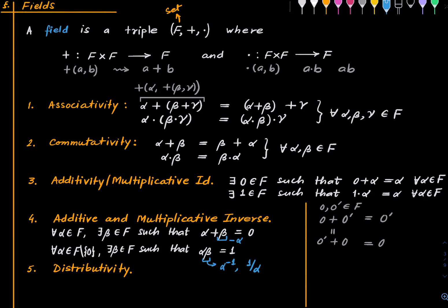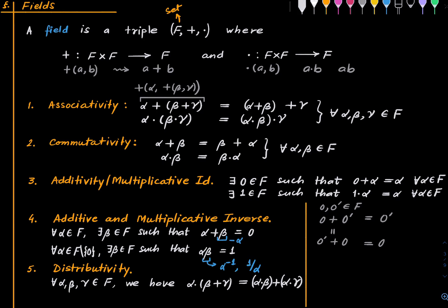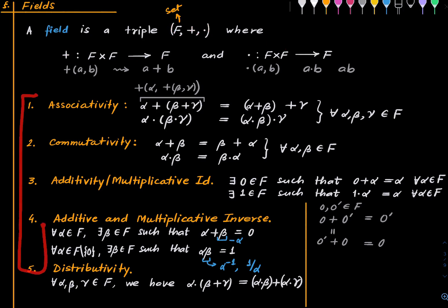Lastly, the distributivity property: for all α, β, γ in F, α · (β + γ) = α · β + α · γ. So a field is a triple (F, +, ·) where + and · are functions from F × F to F satisfying these five properties. These five properties were already present for rational numbers; we have just extracted them as a template to work with.